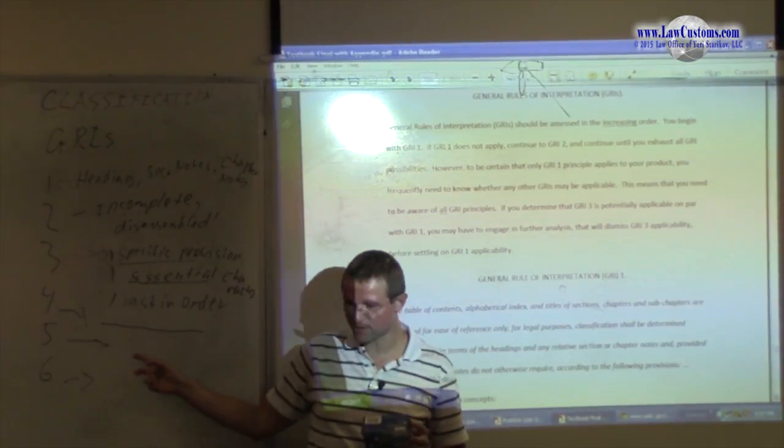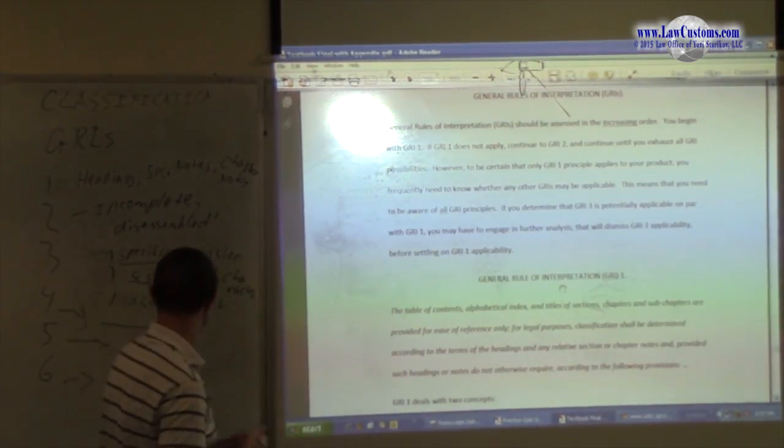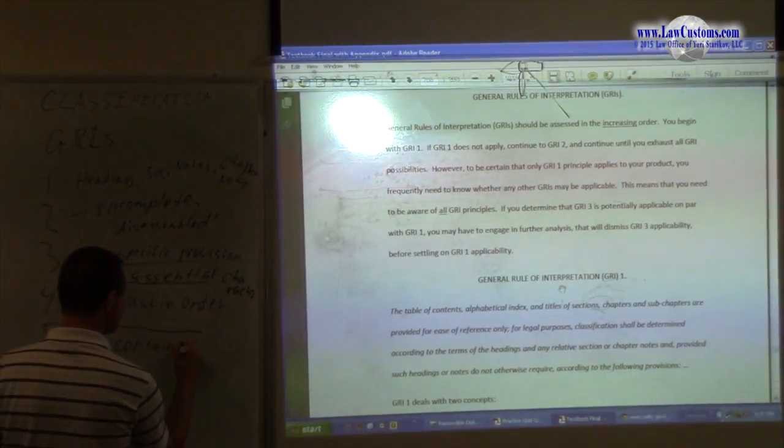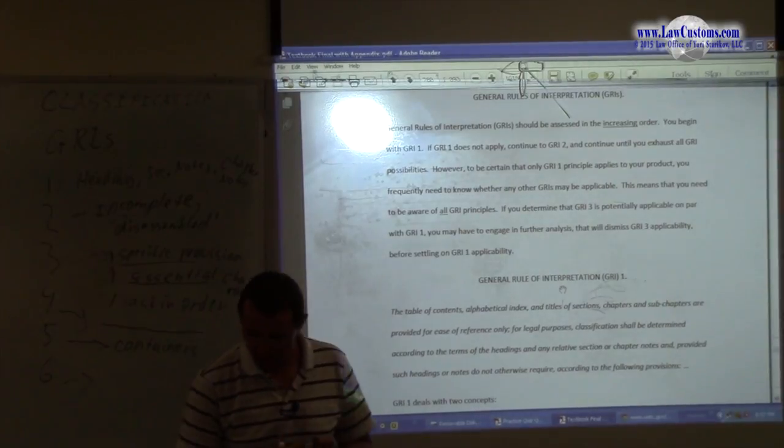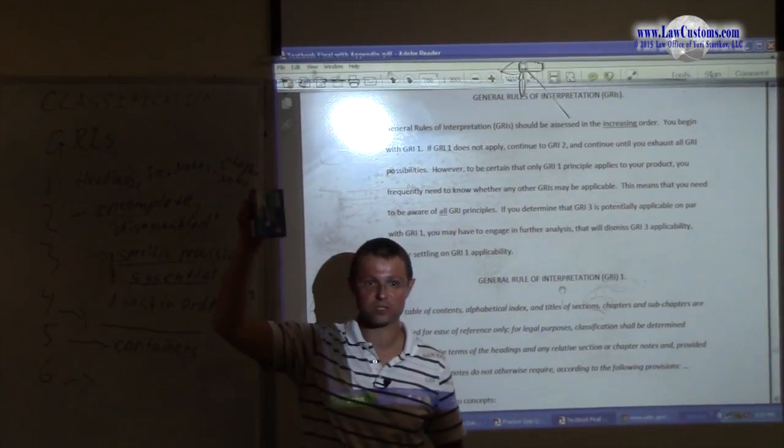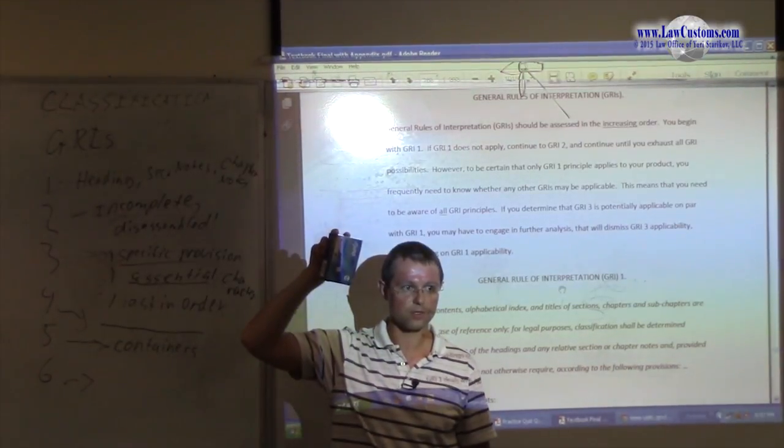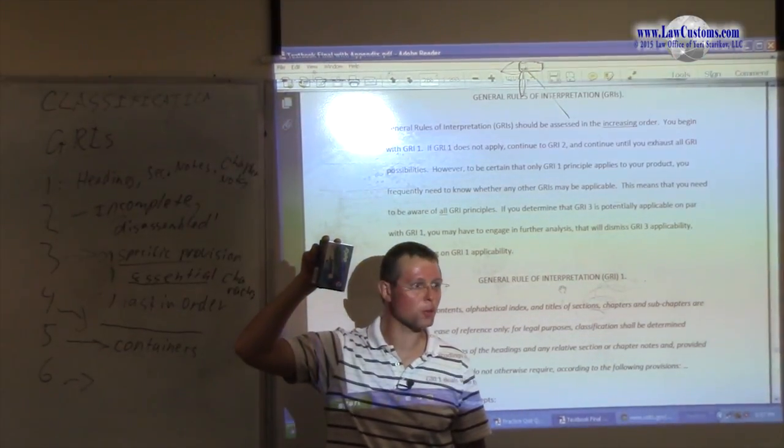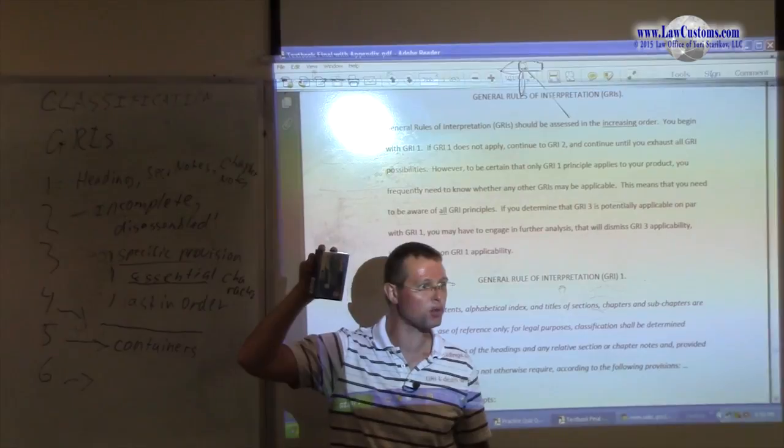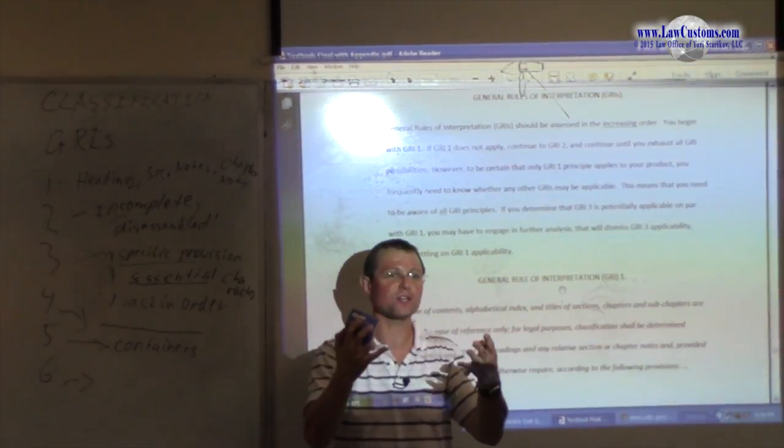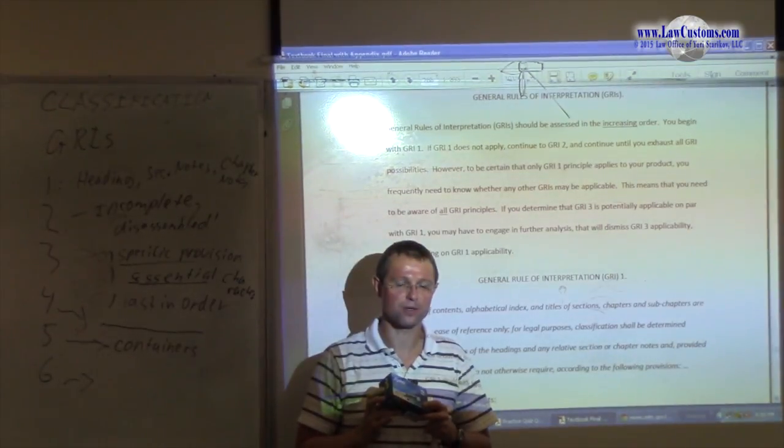And the rule—it says GRI 5, it's a containers rule about containers. So the point is: it's a usual container that comes with the article, then you classify it as it was part of that article. It is that article, okay? So you need to declare the origin of the country, right?